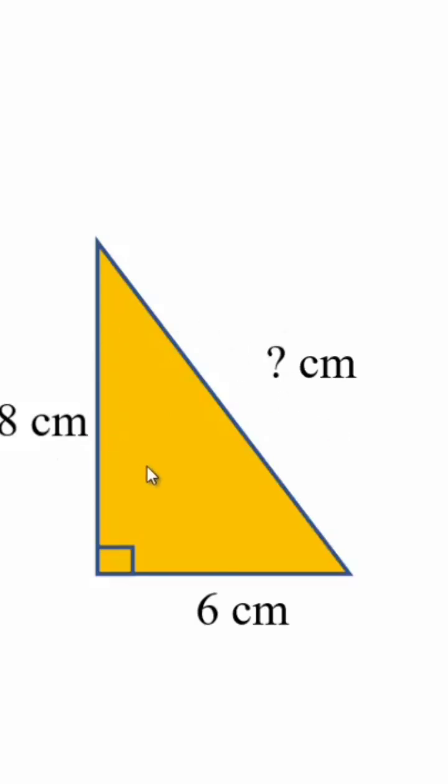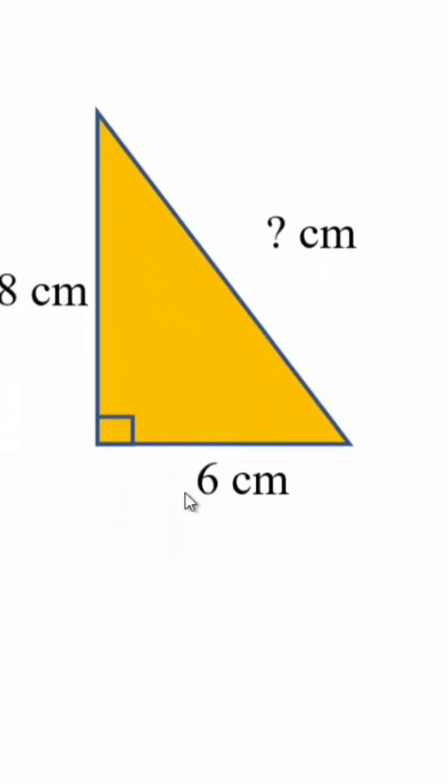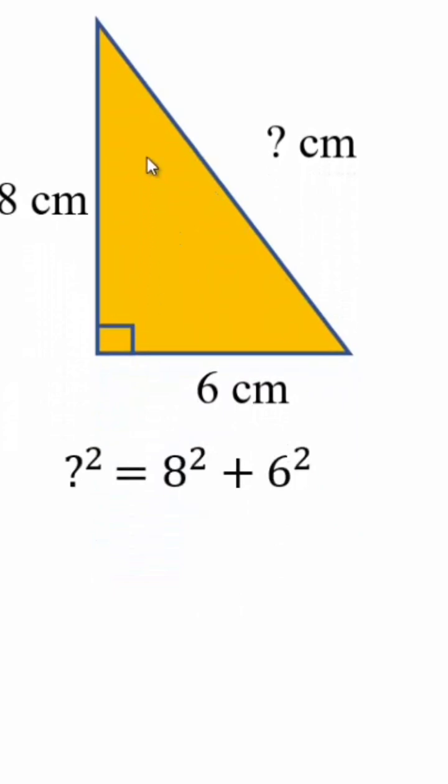You can use the Pythagorean theorem. The Pythagorean theorem says that the hypotenuse squared is equal to the sum of the squares of the two shorter sides of the right angle triangle. That gives us